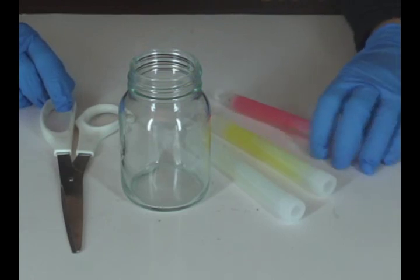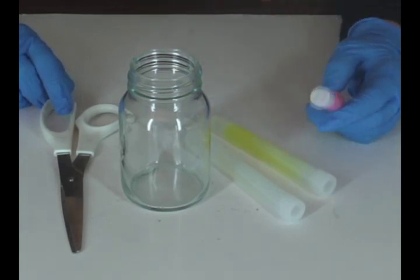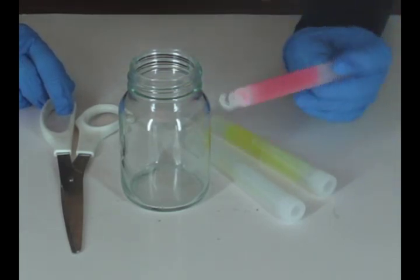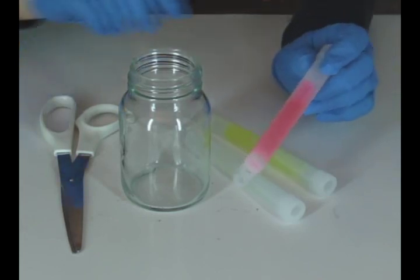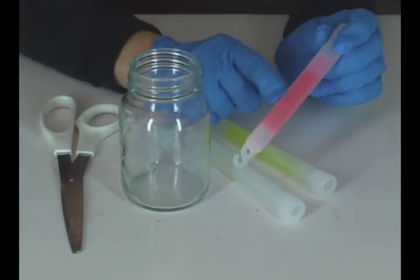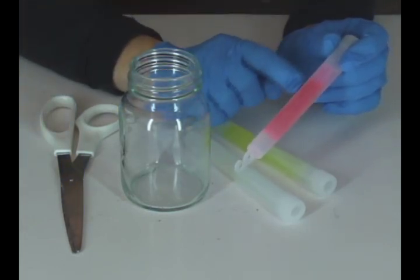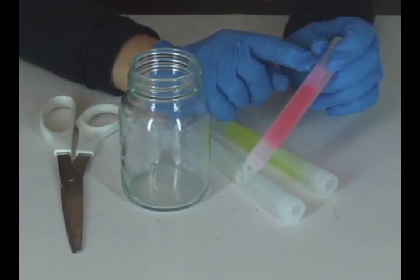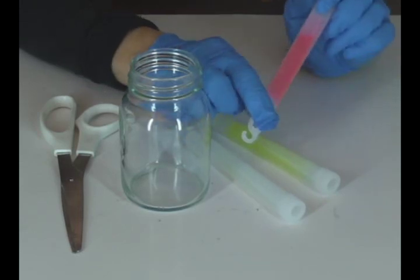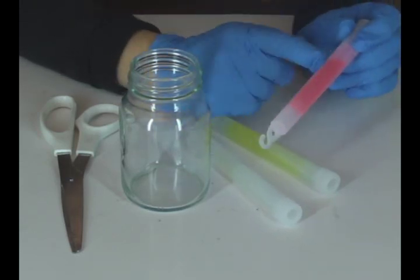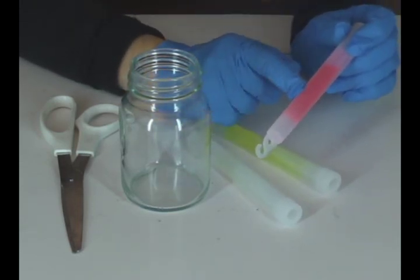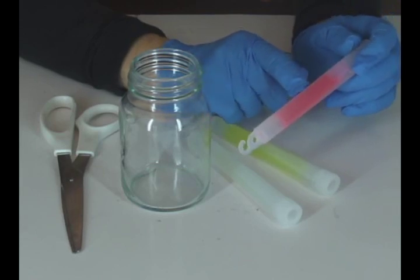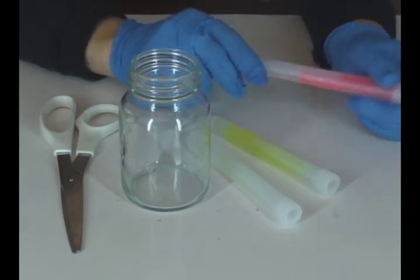This experiment is only going to work if you use a true color light stick, meaning that the light stick itself is clear, so the color of the liquid inside is actually the color you're getting. Often light sticks will have like a red plastic coating and it will be a green light coming from inside the glow stick. That's not going to work.